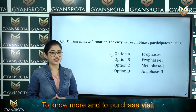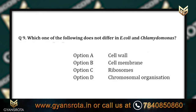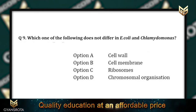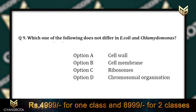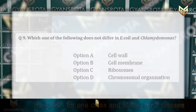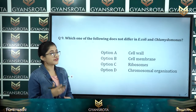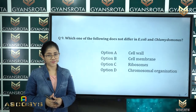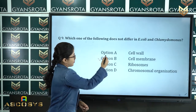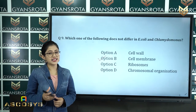Question number 9: Which one of the following does not differ in E. coli and Chlamydomonas? Options include cell membrane and chromosomal organization, among others. The correct answer is option B, cell membrane. Cell membrane is common to both E. coli and Chlamydomonas. This question comes from the chapter Biological Classification.